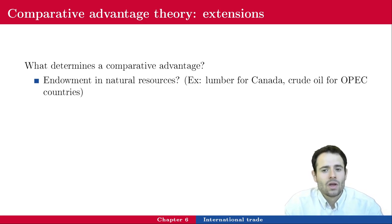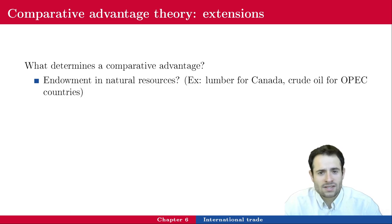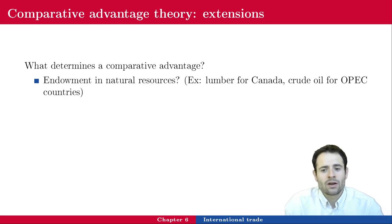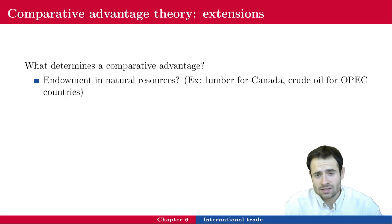The original theory is fairly simple; there is more math involved when determining international prices and the world price equilibrium, but the intuition is the same. It is one of those models where the intuition seems obvious once you know it, but is not at all straightforward before you learn it. The model assumes one country has a comparative advantage in one good and the other country in the other good.